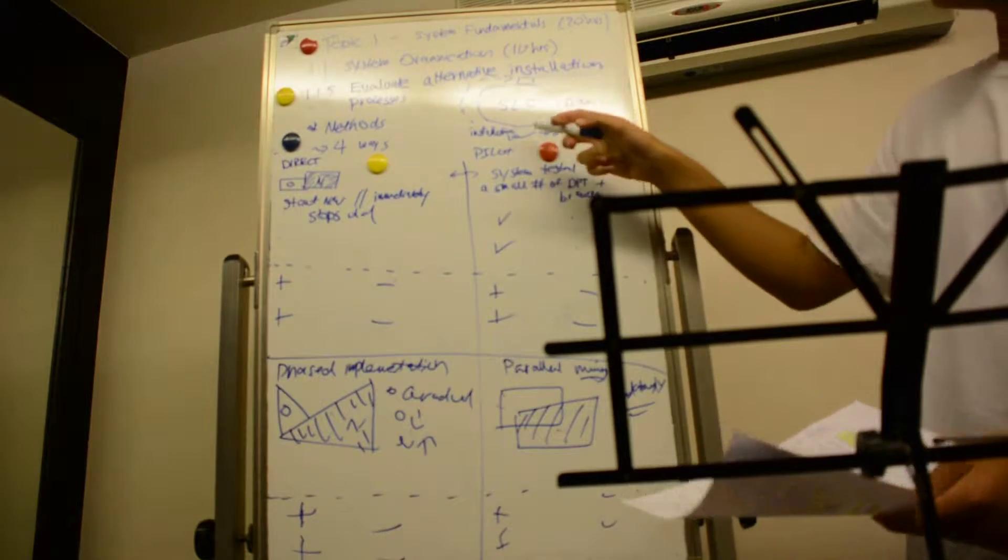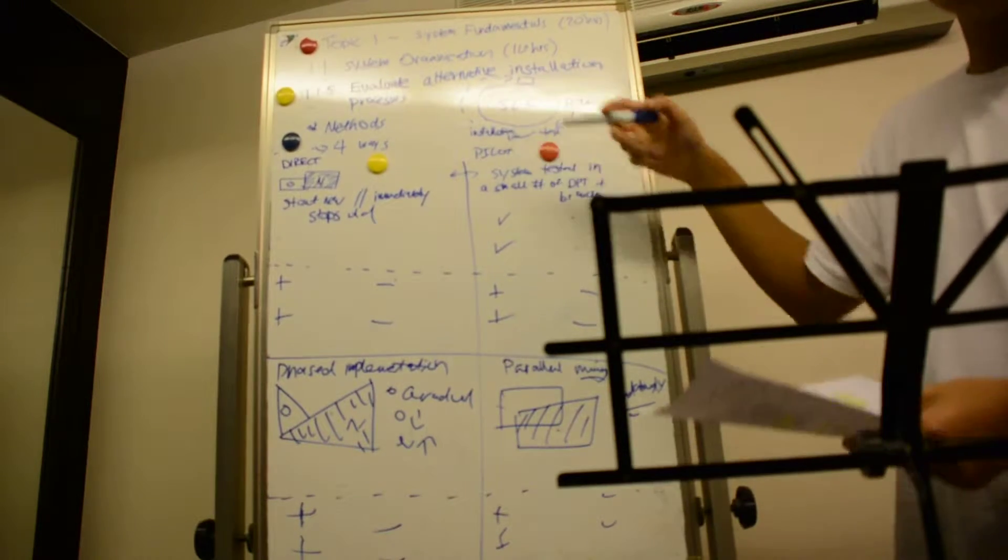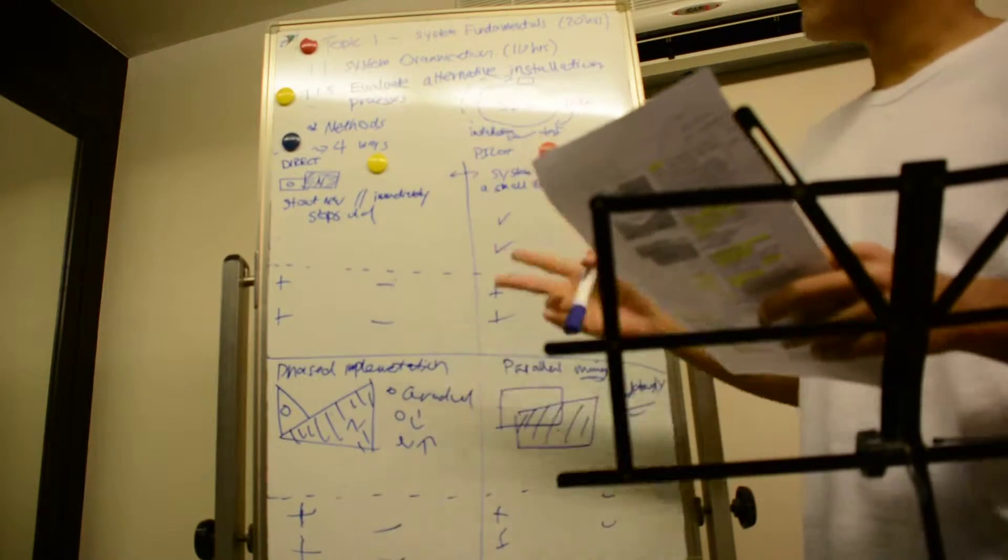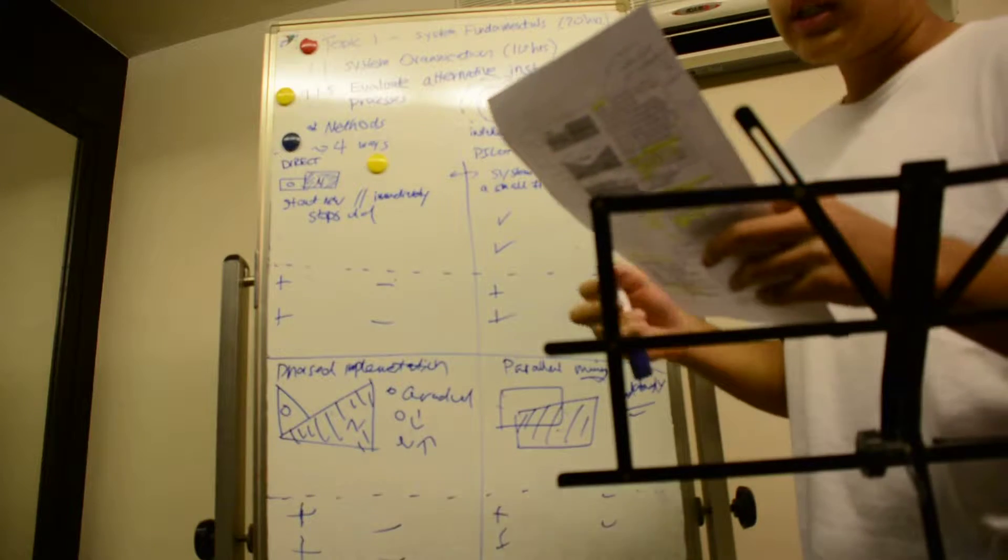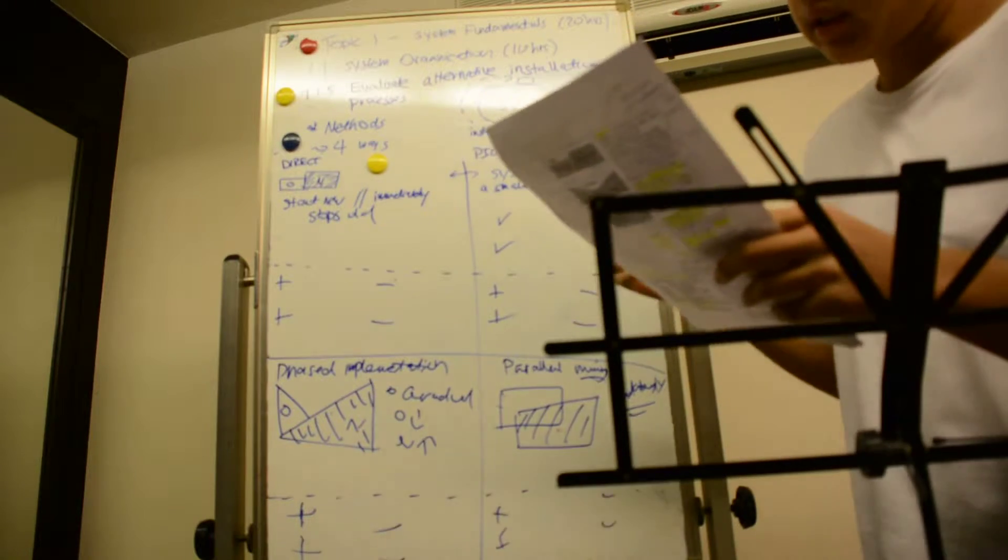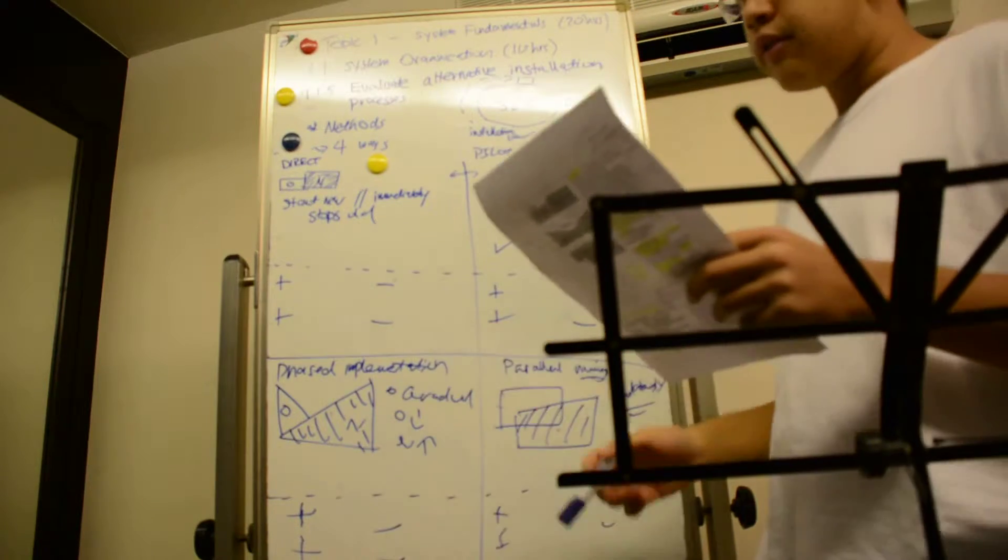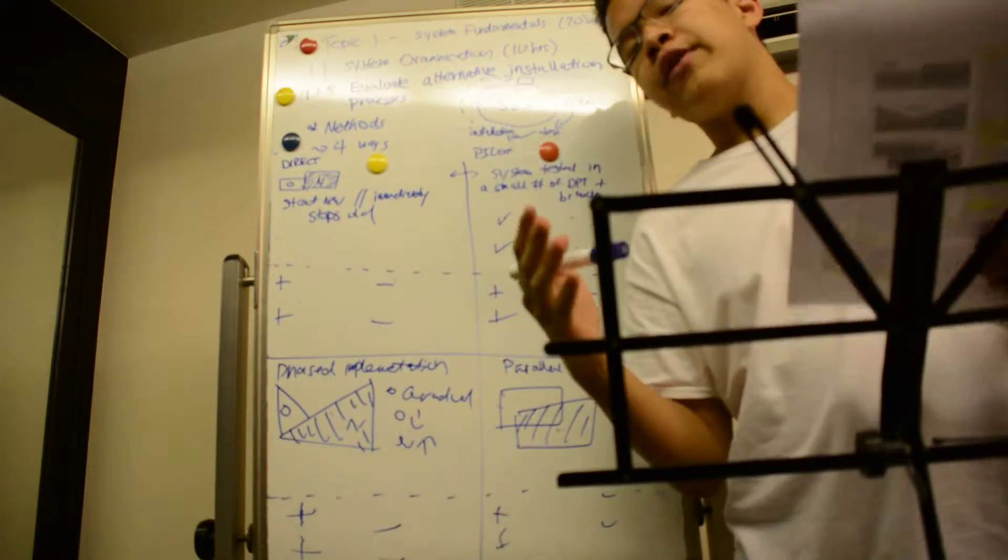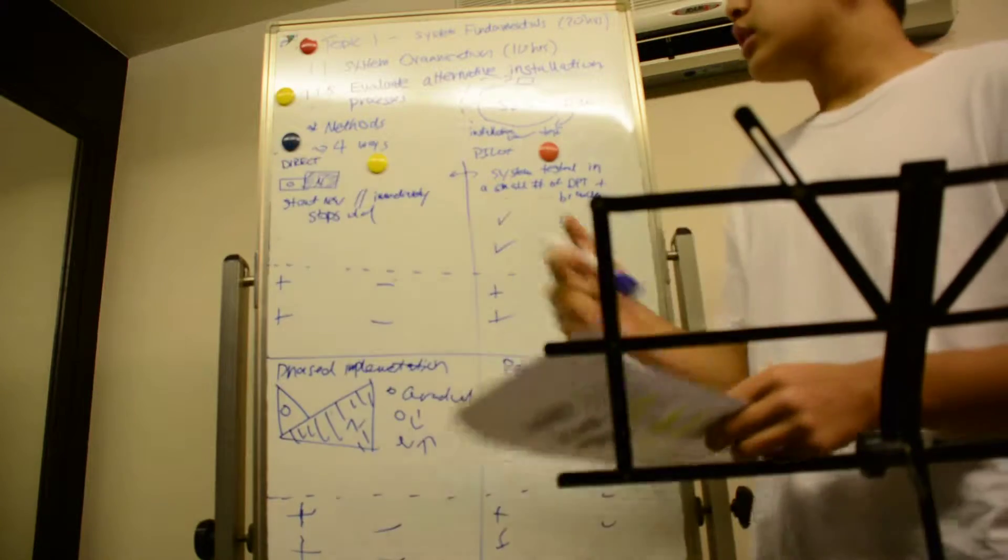After the test in the system lifecycle, there are four different methods of alternative installation processes. They all have different advantages and disadvantages, and some may work better for a specific company than another. Let's start off.